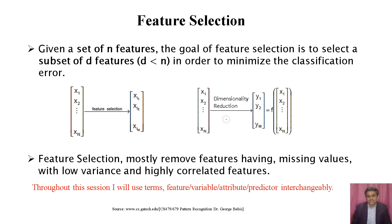The figure on the right shows the working of dimensionality reduction. Suppose in the original data we have n features, and after applying a dimensionality reduction technique we may also get m features. These m features are different from the original features — they are derived from the original features using some function f. Feature selection mostly removes features having missing values, low variance, and high correlation.